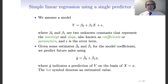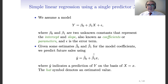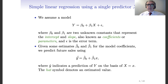β₀ and β₁ are unknown constants that can be interpreted very easily — they represent the intercept and the slope, and are also known as coefficients or parameters. ε is an error term because we cannot believe that such a simple model will predict the target variable without error. Once we have estimates β₀-hat and β₁-hat, we can make predictions formulated as ŷ = β₀-hat + β₁-hat · x.